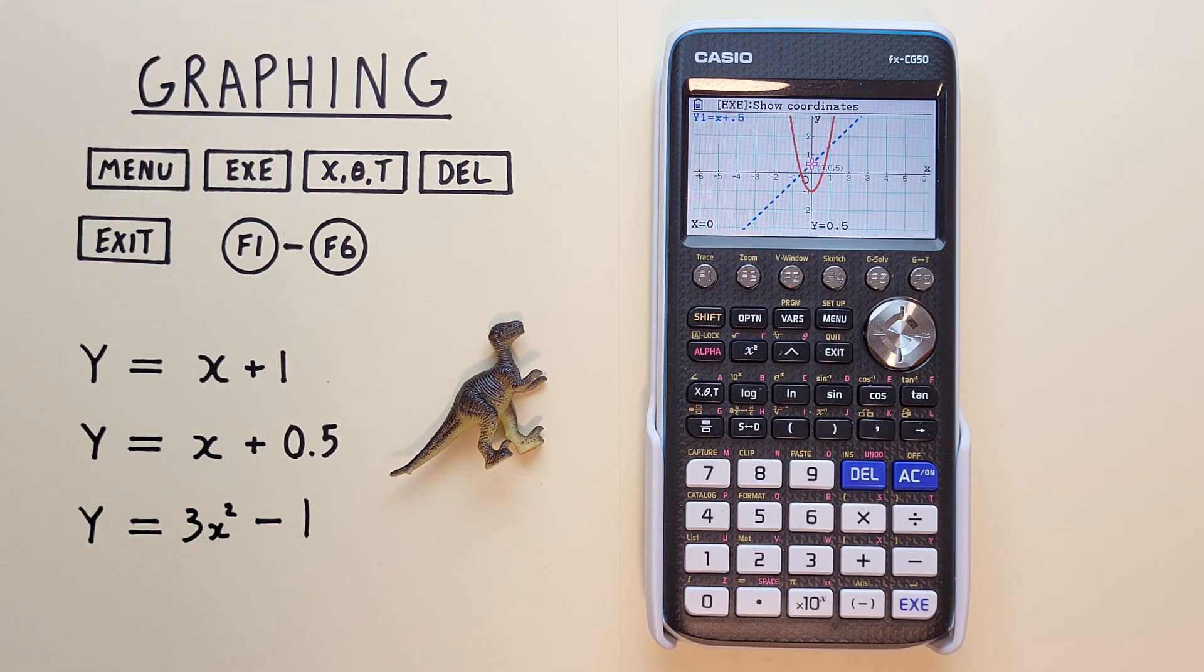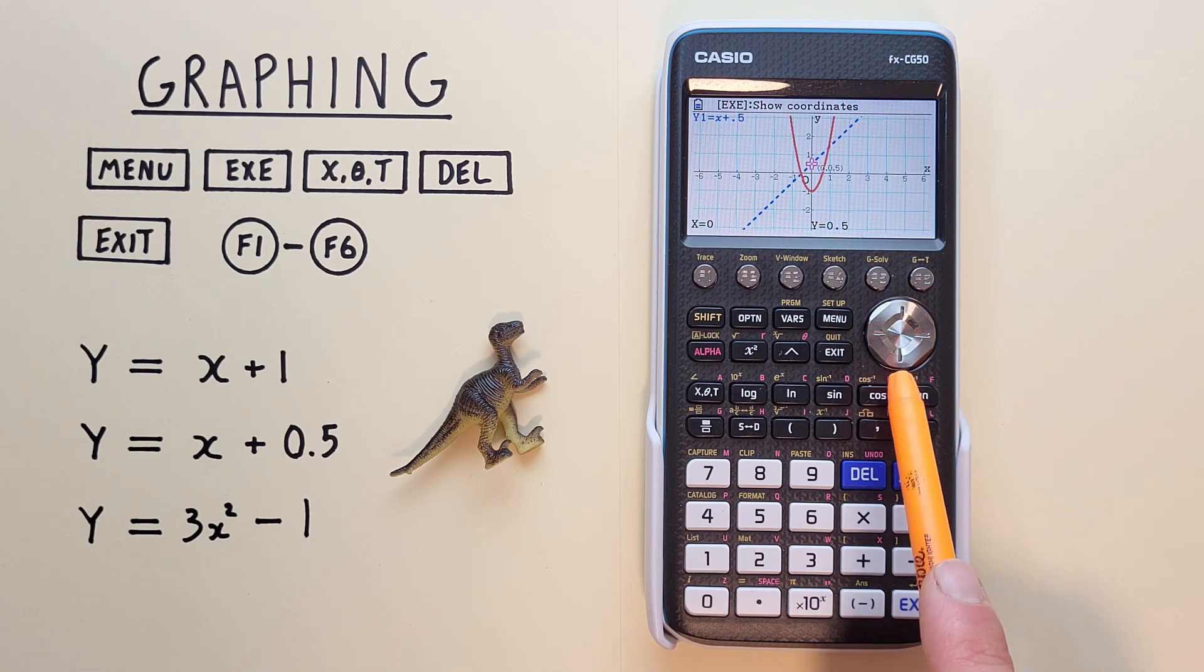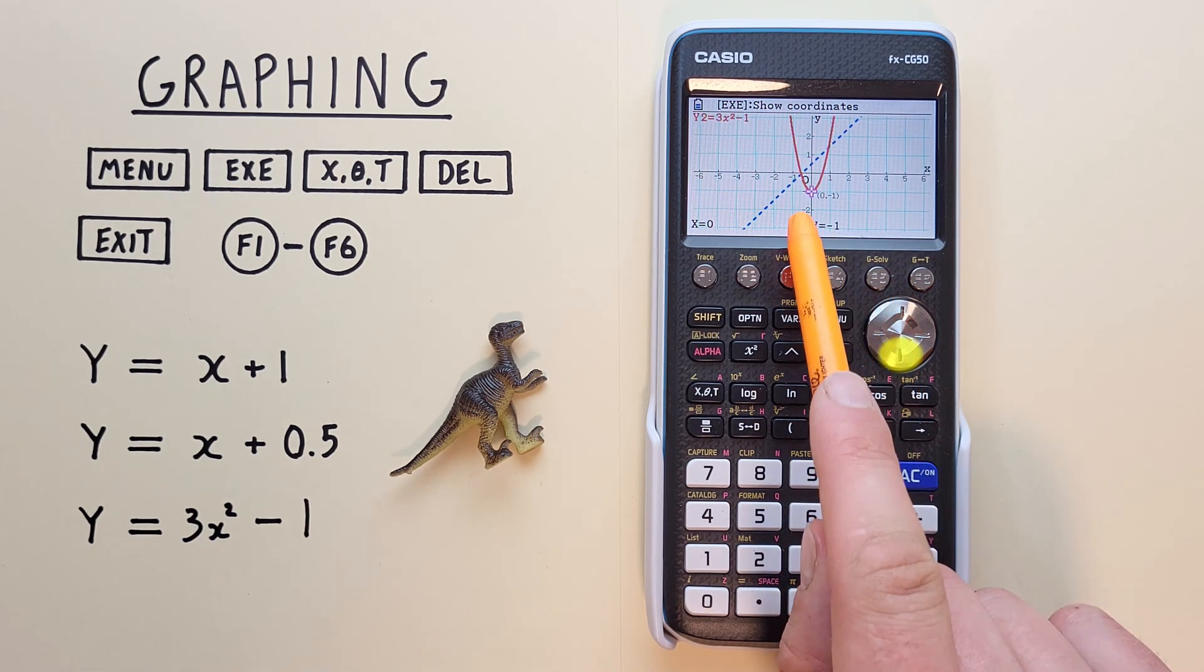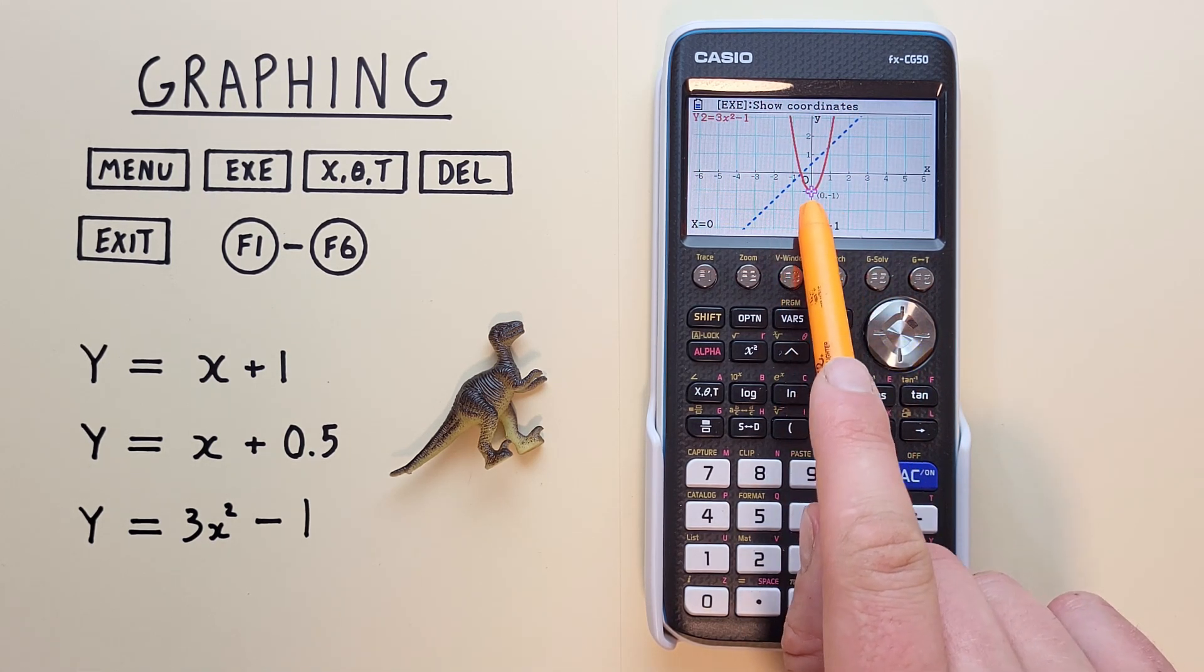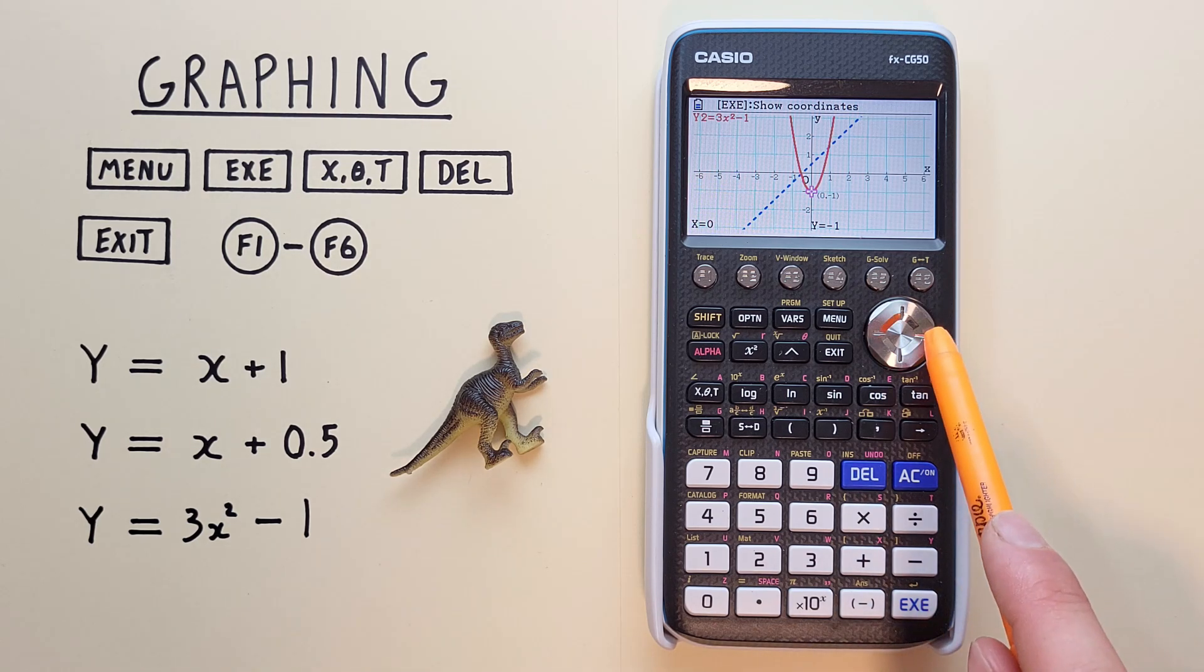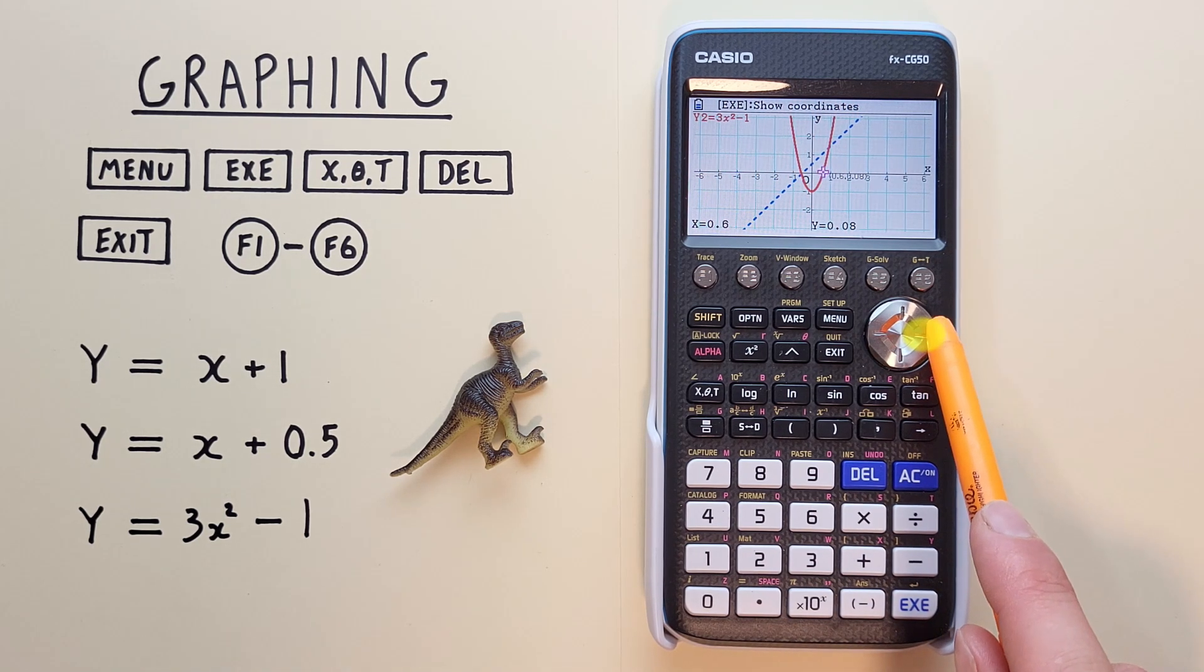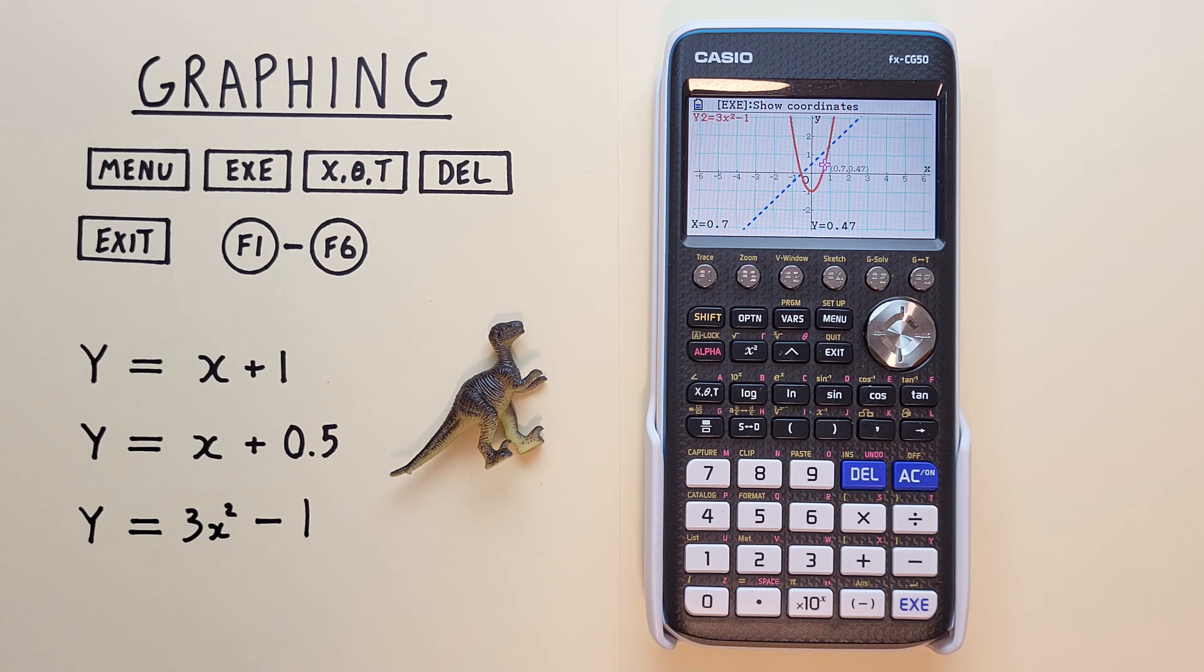To check our other function, just scroll up or down. So we'll go down, and now our cursor is on the Y2 function, and we can scroll left or right on it to see our X and Y values.